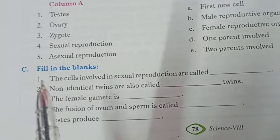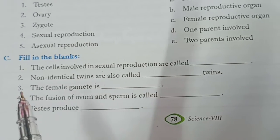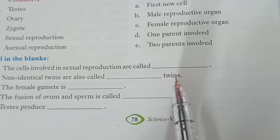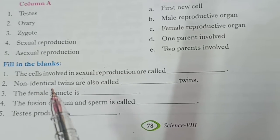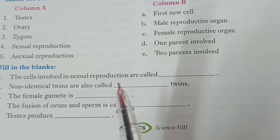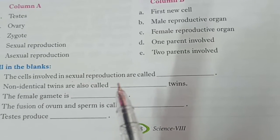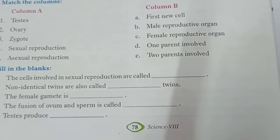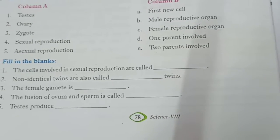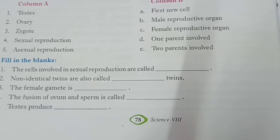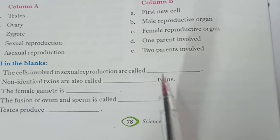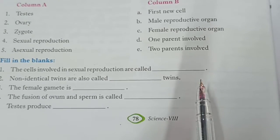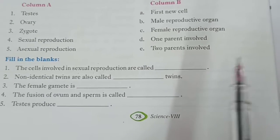Part C: fill in the blanks. First: the cells involved in sexual reproduction are called — aapko us cell ka name batana hai jo sexual reproduction mein involved hote hain. Answer: gametes. Ya phir aap sperm cell and ovum cell bhi likh sakte ho, dono right hain.